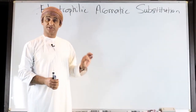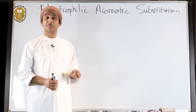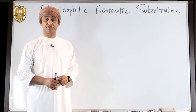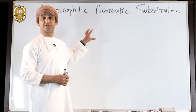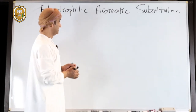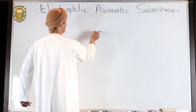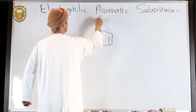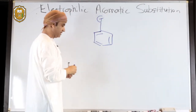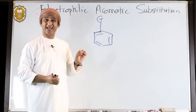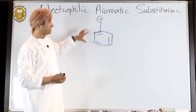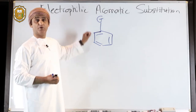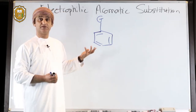What effects would substituents have on the benzene ring with respect to its nucleophilicity and subsequent effect on electrophilic aromatic substitution reactions of benzene? Let's draw a general structure of a substituted benzene. G represents a group in general — so this is a substituted benzene. What effect would that group have on the benzene ring with respect to nucleophilicity?